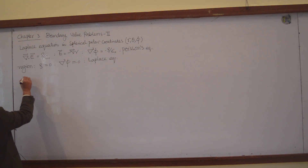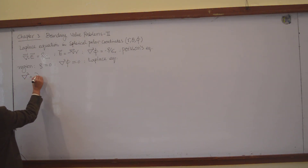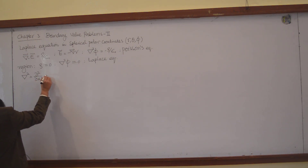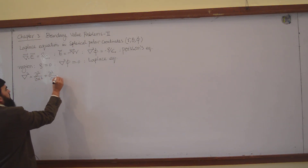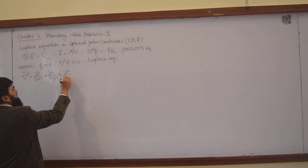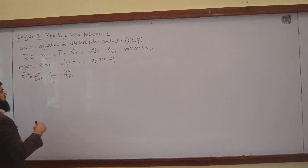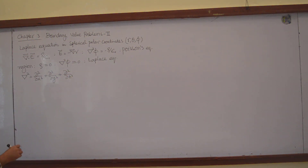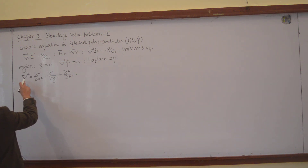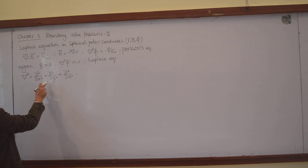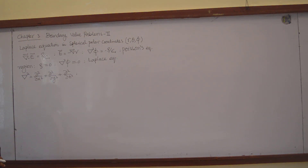We have solved the Laplace equation in Cartesian coordinates, where del squared is the partial derivative with respect to x squared, plus partial with respect to y squared, plus partial with respect to z squared. Now I want to convert this Laplacian from Cartesian to spherical polar coordinates.